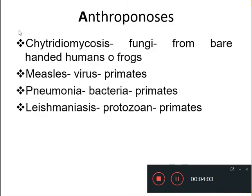Now we will go to anthroponosis, that is diseases transmitted from humans to animals. The first one is Kite radiomycosis, caused by fungi, which can be transmitted from infected bare-handed humans to frogs. Next is measles, a viral disease that can be spread from humans to primates. Pneumonia, a bacterial disease, and Leishmaniasis, a protozoan disease caused by Leishmania, can also be transmitted to primates.